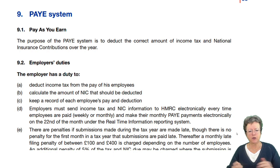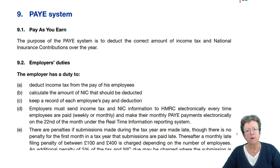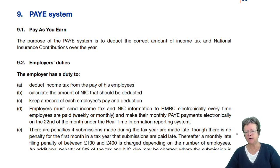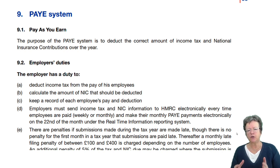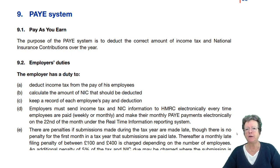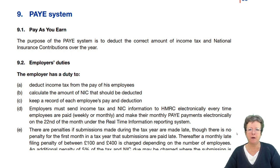The final part of this chapter on employment income is regarding the pay-as-you-earn system that operates on employment income, deducting the correct amount of tax and national insurance contributions from people's salaries. This is probably just technical and background information rather than anything you're going to find major questions on. It's much more likely to be a small multiple choice question in Section B, and it's rarely going to turn up anywhere else.